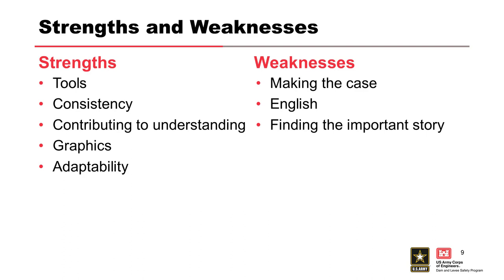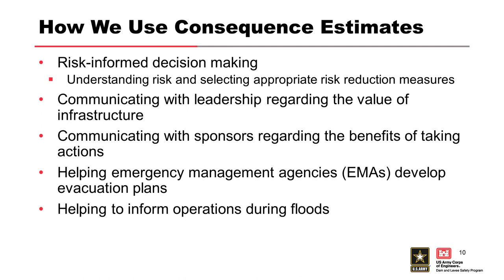For consequence estimates, we use them for risk-informed decision-making like you saw on those charts. It helps us prioritize not only which structures we need to focus on, but also what measures we should implement for risk reduction at a given structure. It also helps with communicating with leadership regarding the value and benefits of our infrastructure. Talking with sponsors — where we've been challenged the most — being able to interact with them, talk about the benefits and actions they should be taking and why. The consequence part is one thing that's a lot easier for most people to grasp, so that's a good way to get in the door and start having those conversations.